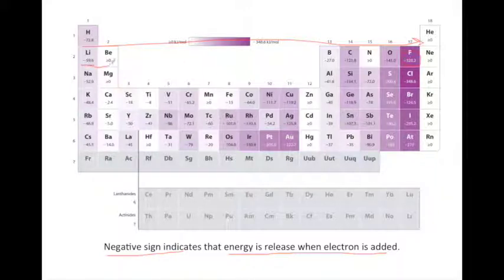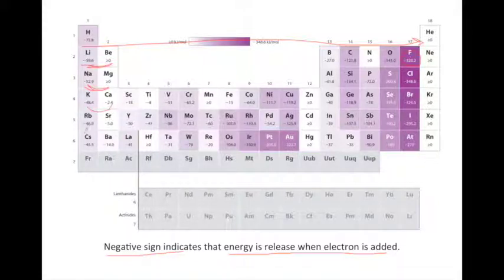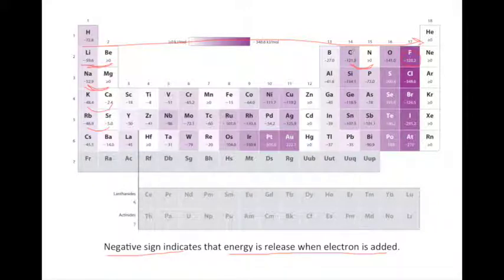However, there are some exceptions. Right off the bat, from lithium to beryllium, there's actually a drop in the electron affinity. We also see that trend between group one and two in the third period, the fourth period, and so on. And as we move on over, we see that there's a drop in the electron affinity between carbon and nitrogen, indicating that nitrogen is less likely to accept an electron compared to carbon. The same thing occurs from silicon to phosphorus, germanium to arsenic, and so on.